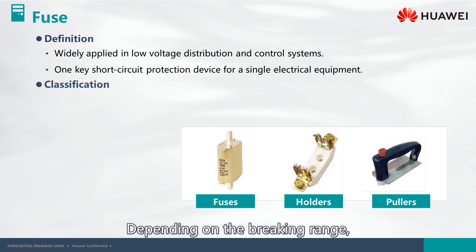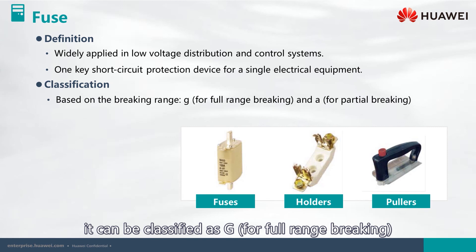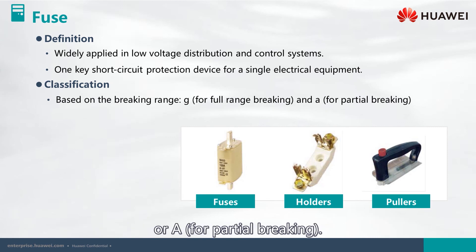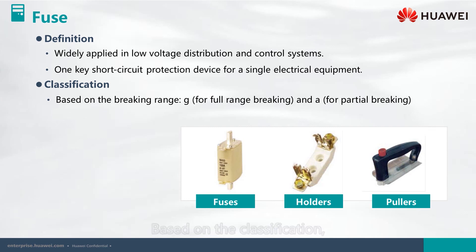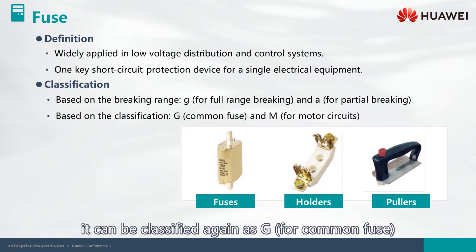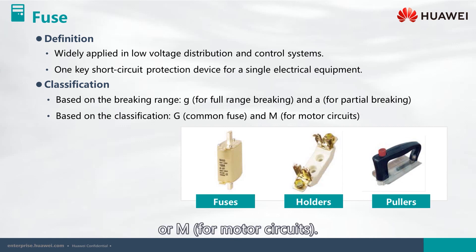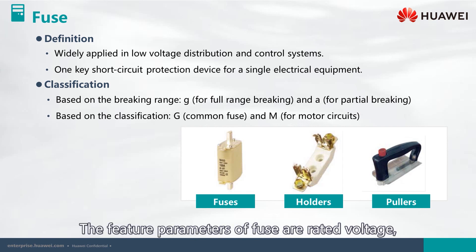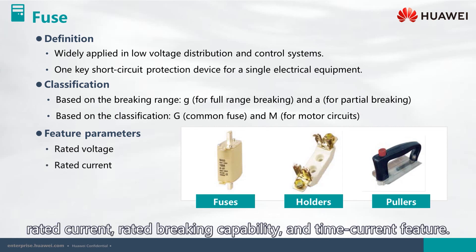Depending on the braking range, fuses can be classified as G for full range braking or A for partial braking. Based on the application, they can be further classified as G for common fuse or M for motor circuits. The key feature parameters of a fuse are rated voltage, rated current, rated braking capability, and time-current characteristic.